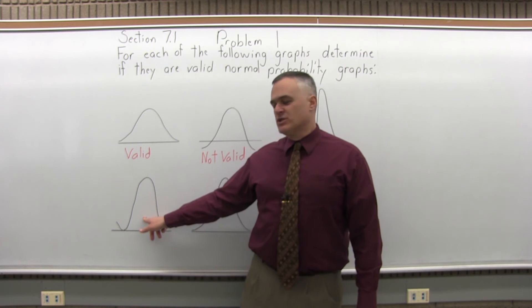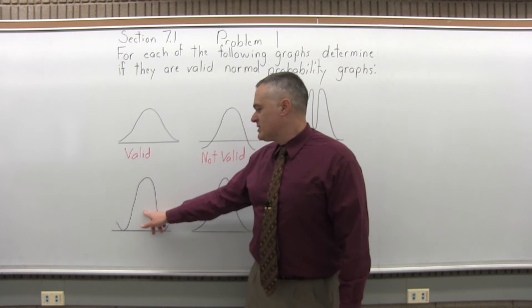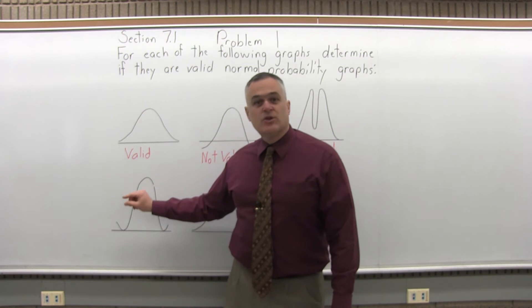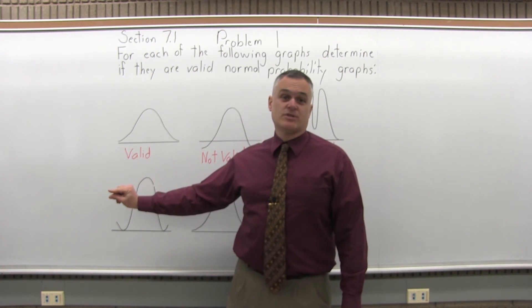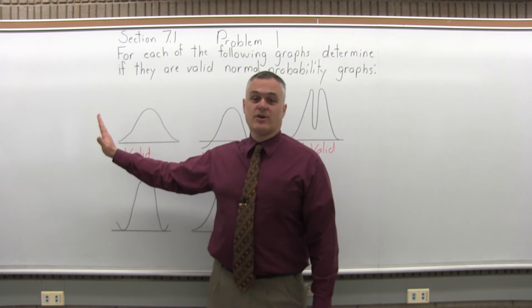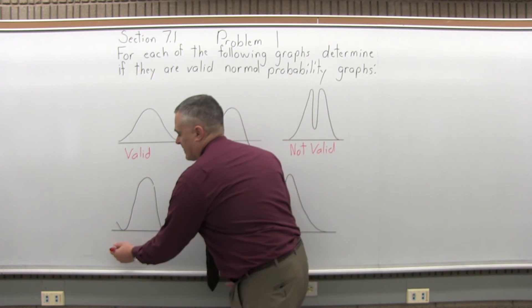The next one is close, but it's also not valid. What makes this one not valid is that the ends of the graph as they go down don't continue to get closer and closer and closer to the horizontal line without touching. They come down and they actually touch it and then they start going back up. So that makes it not valid.